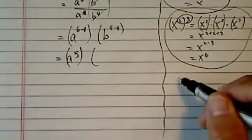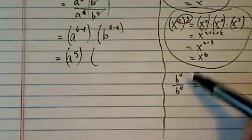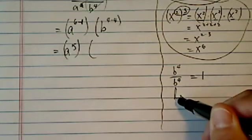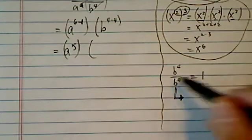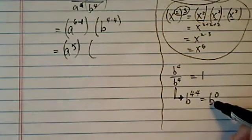Well, what happens b to the fourth minus b to the fourth? Let's try it. b to the fourth, b to the fourth. We know the answer has to be one, because top and bottom cancels. Also, we also know, when you divide here, we're going to subtract, equal to b to the zero.